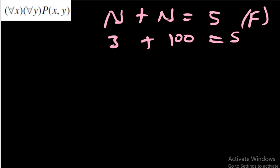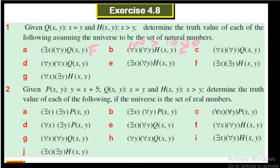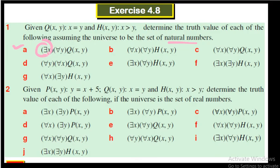There are some exercises to practice. The first question gives q(x,y): x=y, and h(x,y): x>y, with the universe being the set of natural numbers. Part (a) asks about 'there exists x, for all y, q(x,y)': can you fix one natural number x that is equal to every natural number y? No — there is no single number equal to all natural numbers, so this is false.